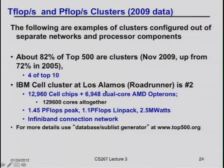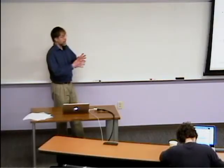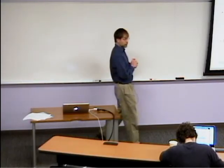Back around 2002, the second-fastest machine in the world was a cluster. It had cell processors — game processors — the fastest things you could buy at the time — plus dual-core AMD Opterons to glue them together, taking advantage of the huge game market investment. Now I think the fastest machine is built out of GPUs from NVIDIA — different kinds of game processors. We'll have a separate lecture on that.